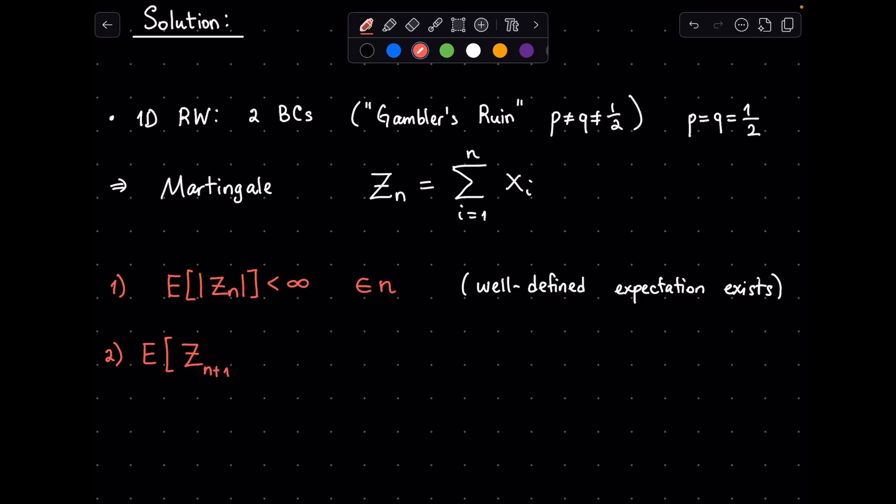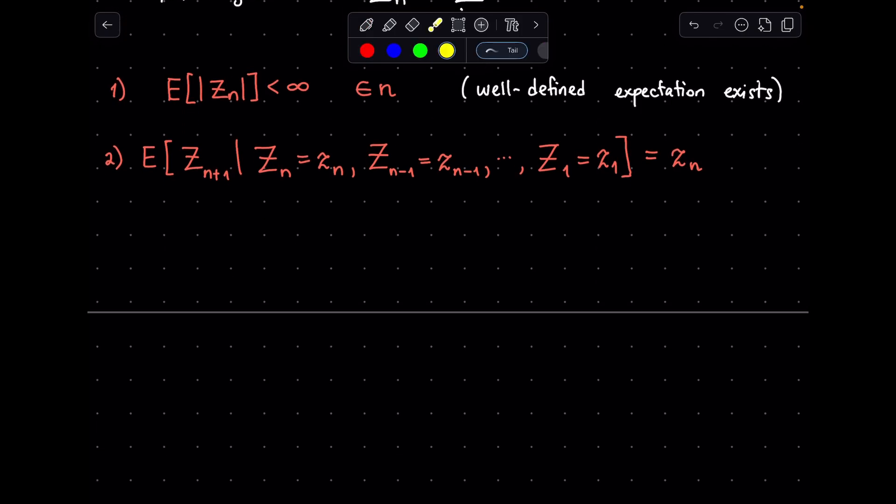The second condition tells us that the expected value of z_{n+1}, namely the next step value, given that the current value of z_n is some known z_n, the previous step value z_{n-1} is some z_{n-1}, etc., and the first z_1 is some known z_1, is equal to the current known value z_n. In other words, if we know the history of the stochastic process until the current step n, then what is the expected value of the next position z_{n+1}? This condition tells us that it should be the current value of z_n. Namely, given that we know the current position, we expect that the next step's value is going to be the same current value.